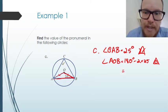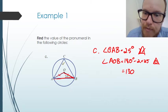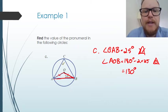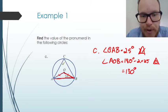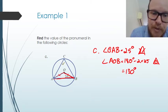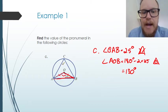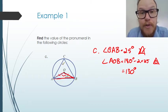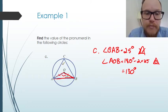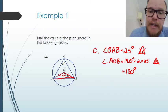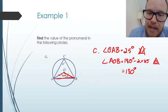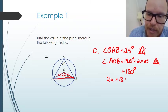So angle AOB is going to be 130 degrees. Now we have our relationship to work with for circle theorem one — two times A is going to equal 130.